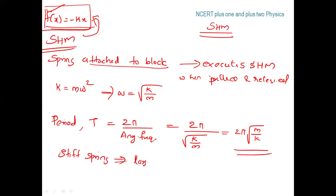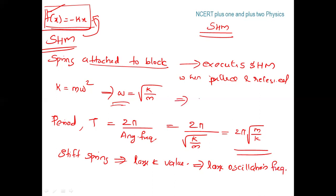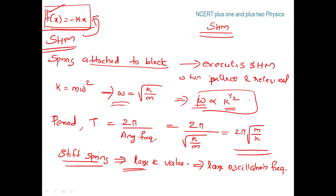A large k value means a lower period T and a higher angular frequency. A stiff spring gives a large oscillation frequency — omega is proportional to √k. A soft spring gives a small k value and therefore a lower oscillation frequency.